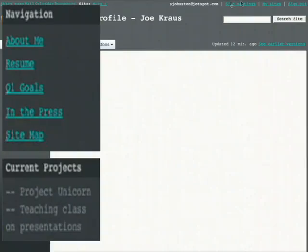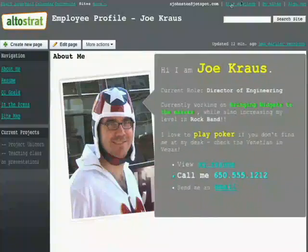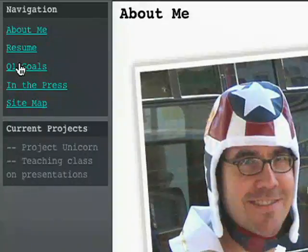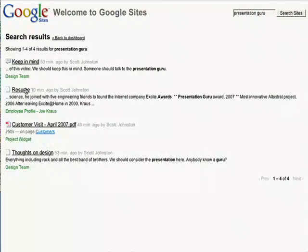Google Sites makes it really simple to publish content. For example, an employee can create a profile site, including their resume, goals for the quarter, and other information. This makes it easy for other employees to find coworkers with specific skills or experience.